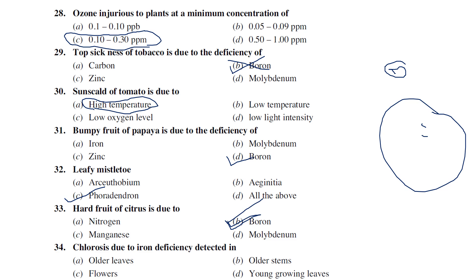Chlorosis due to iron deficiency — chlorosis means yellowing of leaves. Iron deficiency chlorosis (yellowing) is especially observed in young growing leaves. In young growing leaves, this iron deficiency symptom of yellowing can be clearly observed.